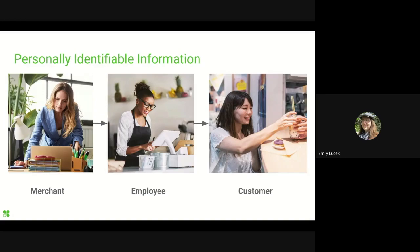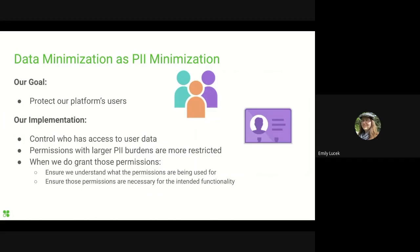Consider how much more personal you can get than a first name, especially when connecting data across permission categories — how much more personal can you get than spending habits? Because personal data needs to be handled with care from a legal and ethical standpoint, data minimization often translates to PII minimization. In Clover terms, this means some permissions are more sensitive than others, such as the individual-centric employee or customer permissions. Some permission combinations are restricted under most circumstances, such as customer and order permissions — otherwise known as spending habits. More sensitive or PII-bearing permissions may not allow for as much creativity in their use.